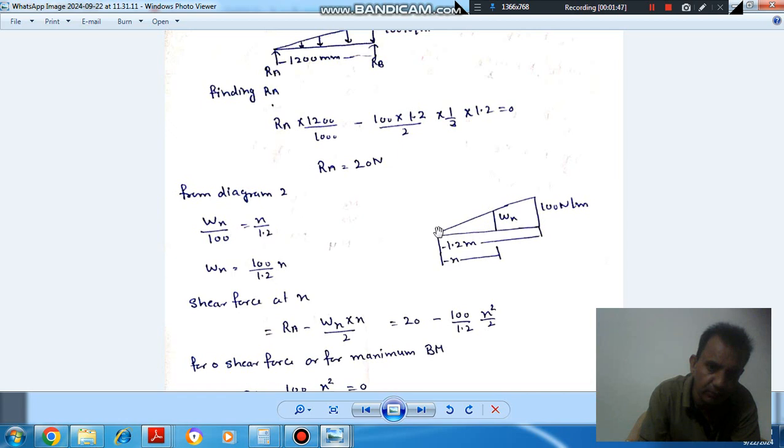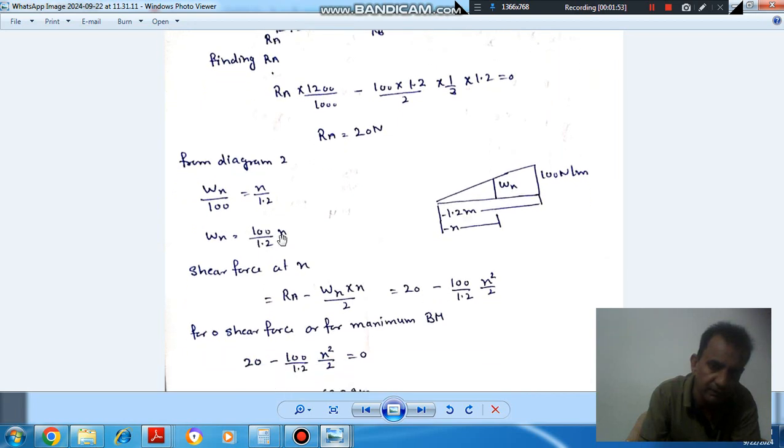From similar triangles we can see that wx by 100 is equal to x by 1.2, or we can say wx is 100 by 1.2 into x. So now we find out the shear force at this section.